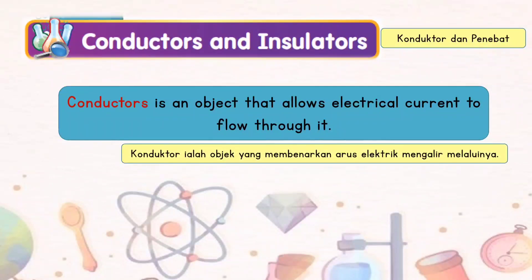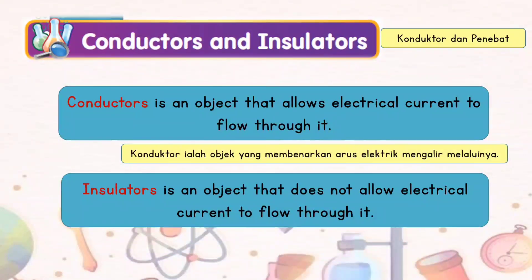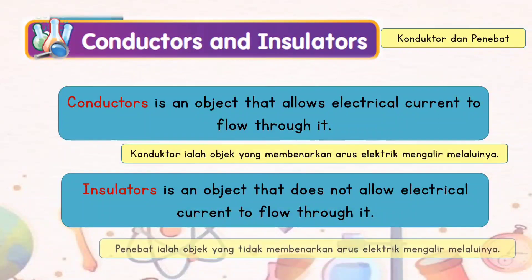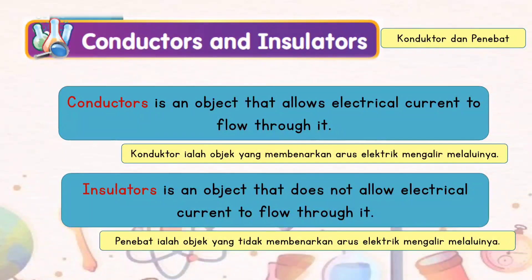Conductors and insulators. A conductor is an object that allows electrical current to flow through it. An insulator is an object that does not allow electrical current to flow through it.